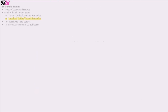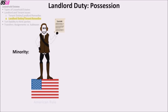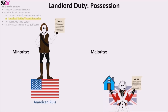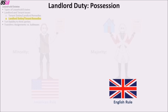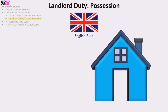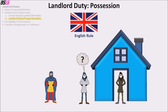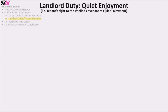Landlord duties fall under eight issues. As to the duty to deliver possession: the minority rule (the American rule) is that the landlord must put the tenant in only legal possession of the property. The majority rule (the English rule) is that the landlord must put the tenant in both physical and legal possession. For example, if a landlord and a new tenant sign a lease but the previous tenant has not moved out when the new lease begins, the landlord is liable to the new tenant for damages.